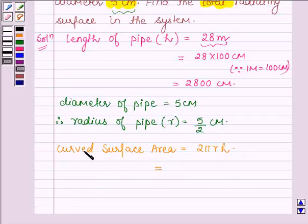Here the curved surface area of the pipe equals 2πrh, where r is the radius of the pipe and h is the length of the pipe. So, 2 into 22 upon 7 into 2800 centimeters into 5 upon 2 centimeters.